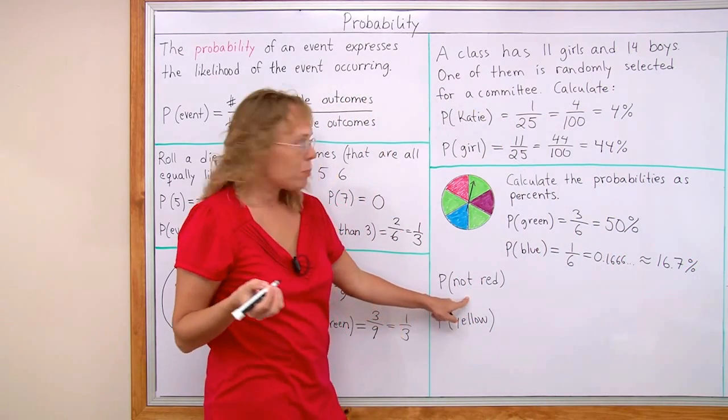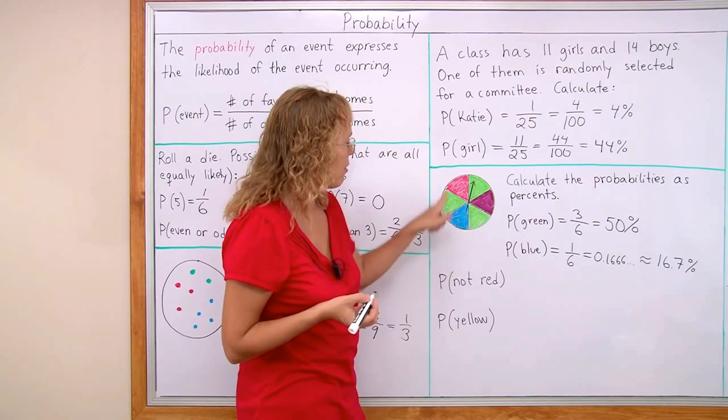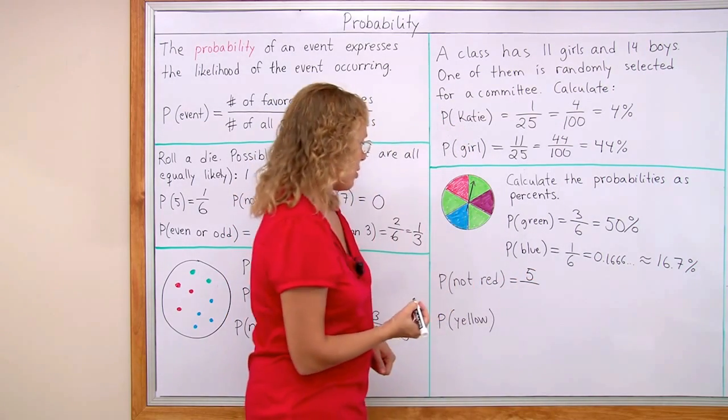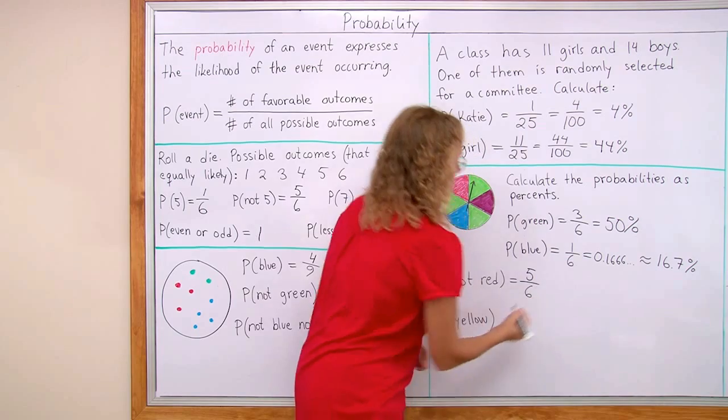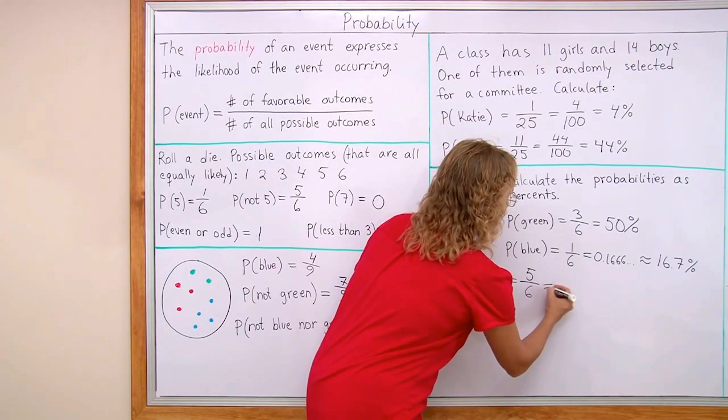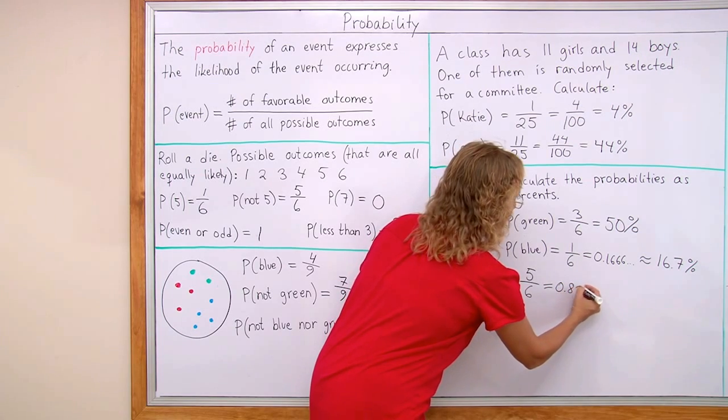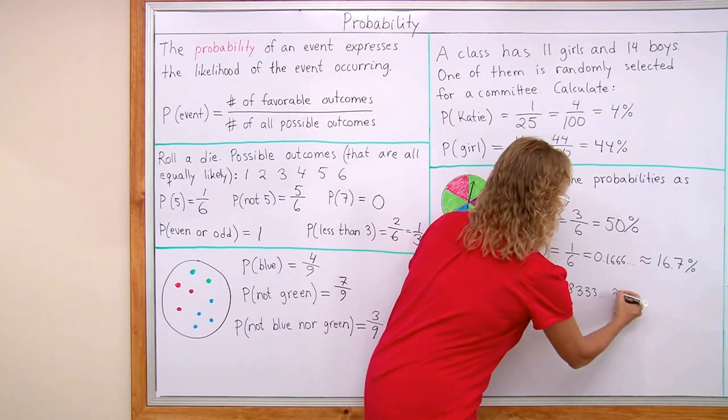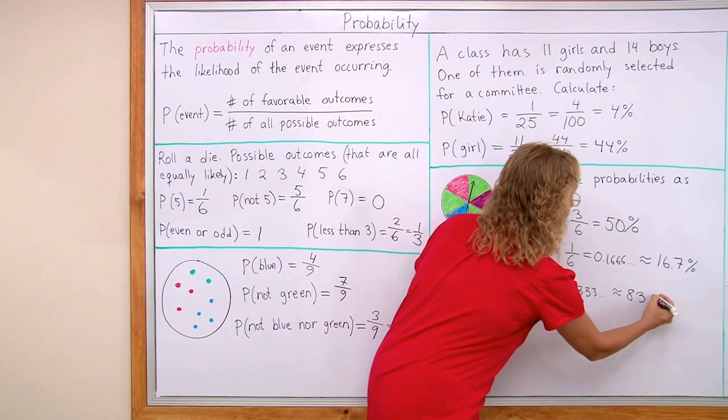The probability of not spinning red. Okay? I have five. Five favorable outcomes and six in total. Again you use a calculator and divide. Five divided by six. And you will get zero point eight three three three. Threes are repeating. And so then that's as a percent. Eighty three point three percent.